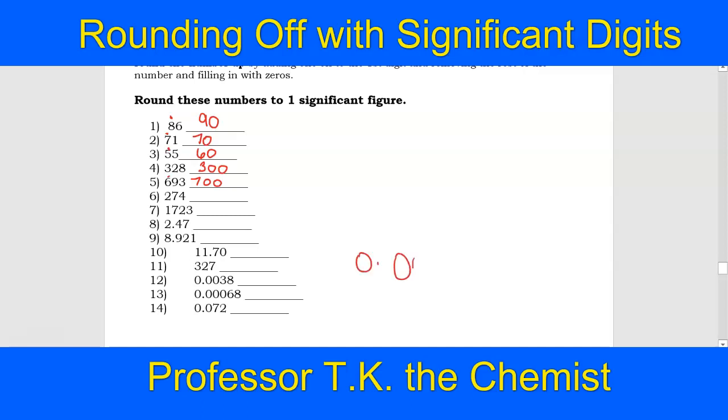Our first significant digit here is the three. The eight tells the three to go up to a four.